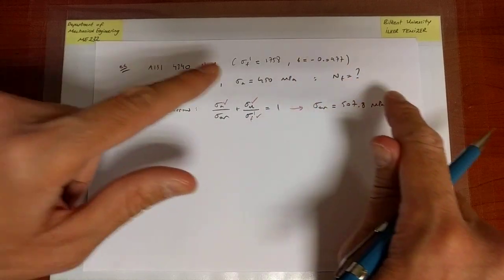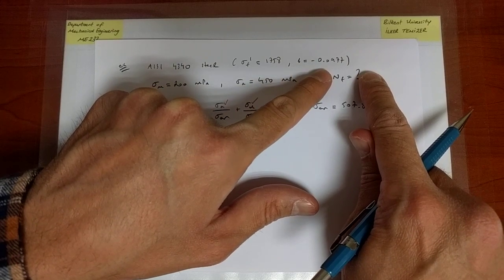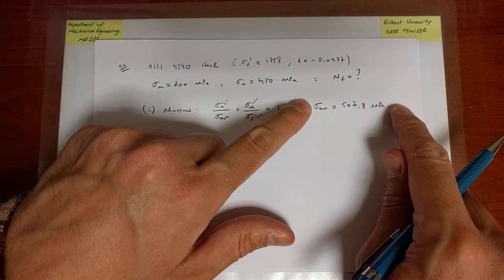So this case is equivalent to that case in the sense that they are both going to achieve the same number of cycles to failure. How do I predict that value?